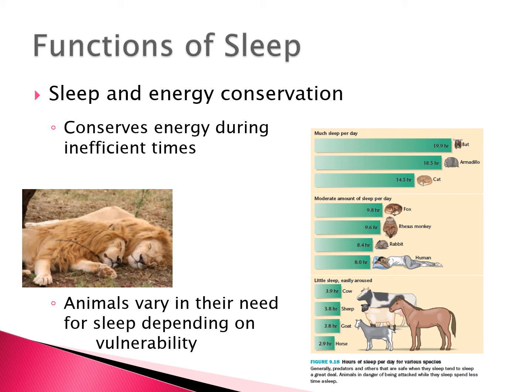Large predatory animals like lions can often be seen sleeping a large portion of the day. Animals that have good places to hide also sleep quite a bit more. In contrast, the sheep, cow, and horse all sleep very little because they are prey animals and are very vulnerable when sleeping.